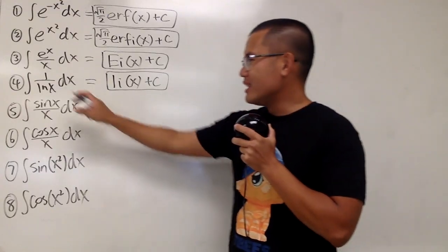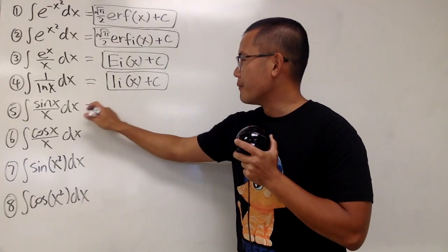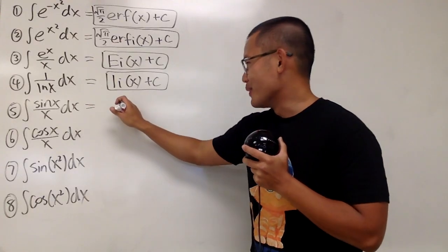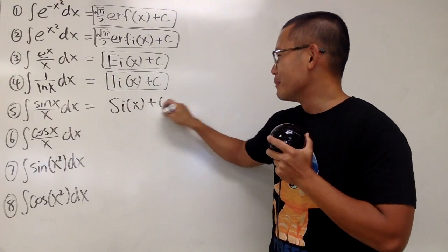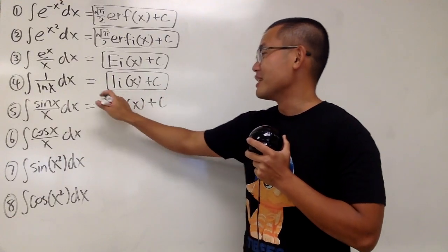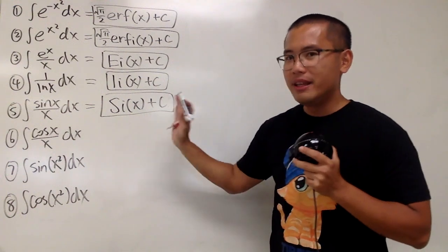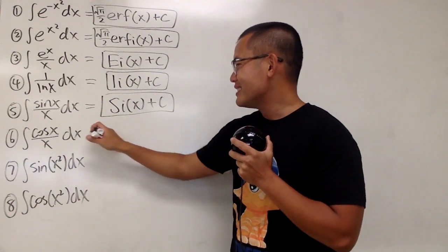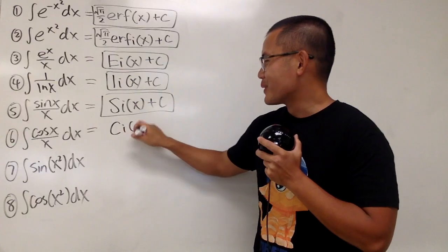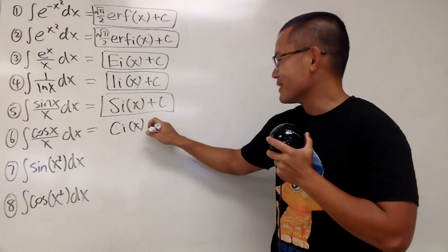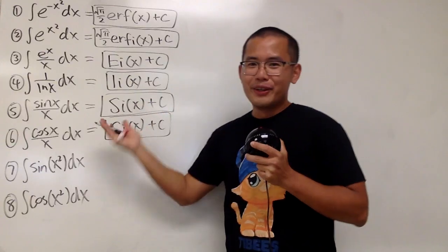Number 5: the integral of sin x over x. This right here is called the sine integral, so you just put on Si of x plus C. No need for any constant multiple. And you can guess it — number 6 is just the cosine integral, Ci of x, and put on plus C. Very, very cool.